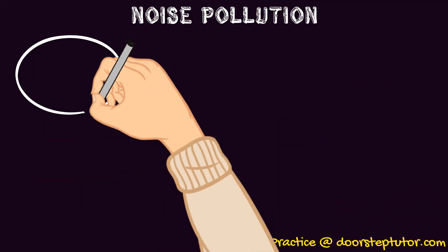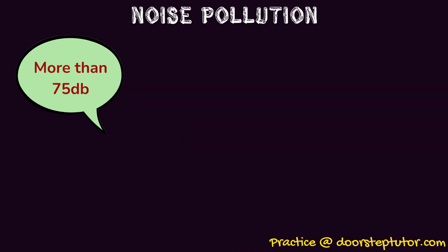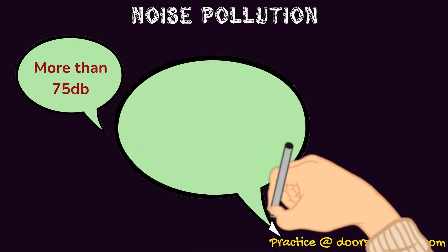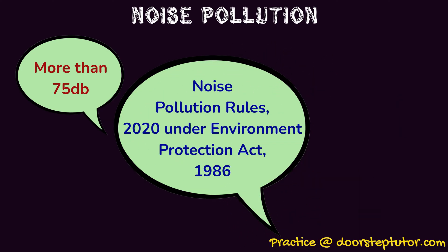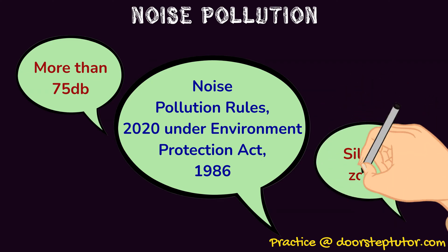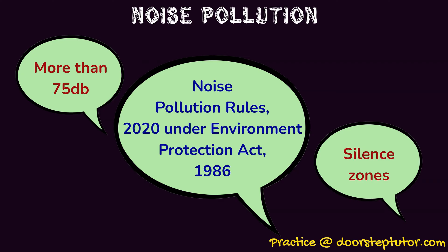Coming to noise pollution: noise pollution is when there is a sound of more than 75 decibels. It is checked under the Noise Pollution Rules 2020, which is under the Environment Protection Act 1986, recently amended. Causes of noise pollution include traffic noise, air traffic noise, construction sites, nightlife, and DJs. To prevent the spread of noise pollution, the government has come up with the idea of creating silence zones, for example near hospitals and schools.